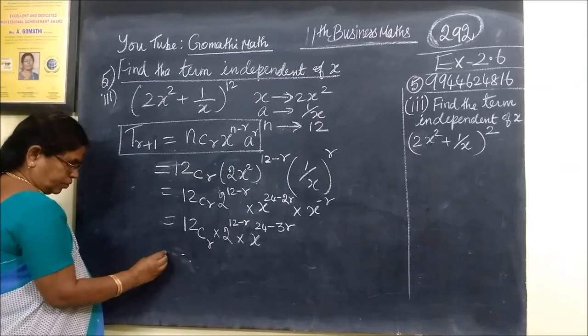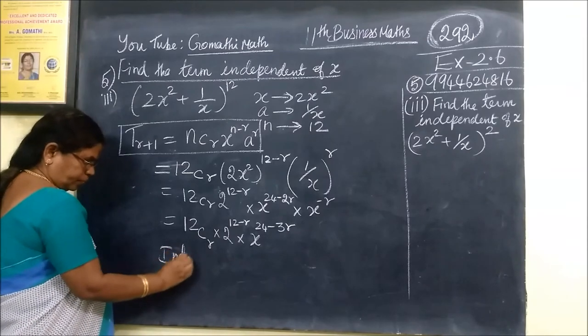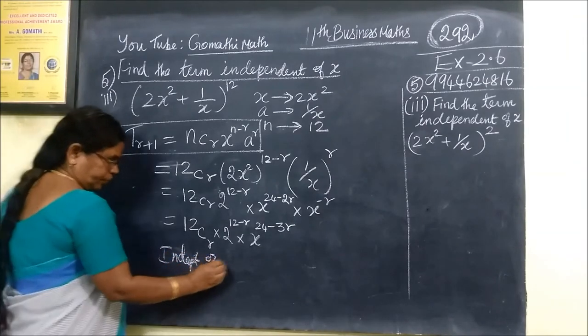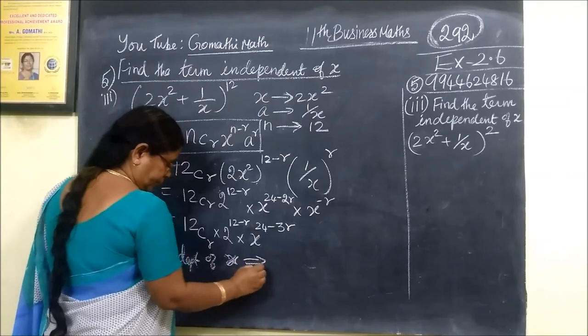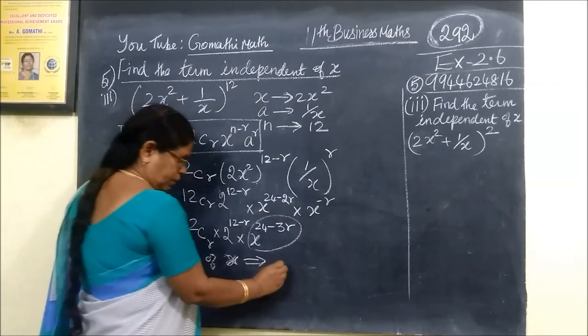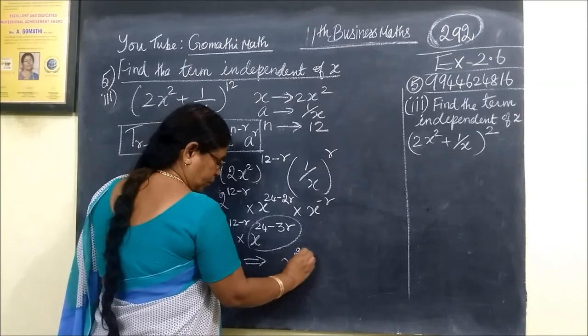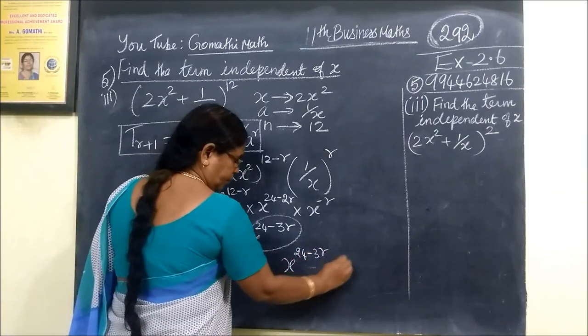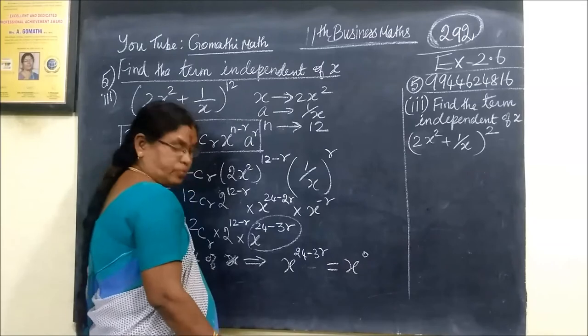So how to find the term independent of x? Independent of x implies, what is this term? What is the term? X power 24 minus 3R equal to x power 0.